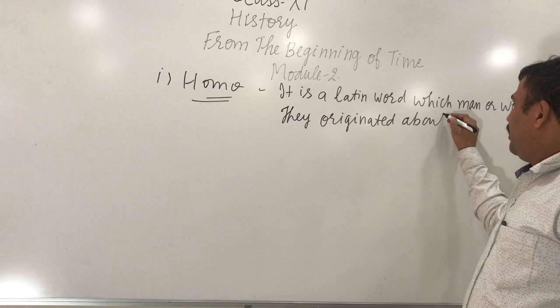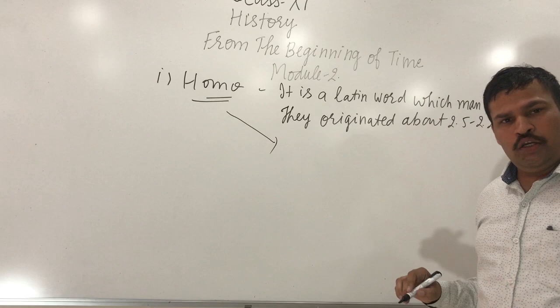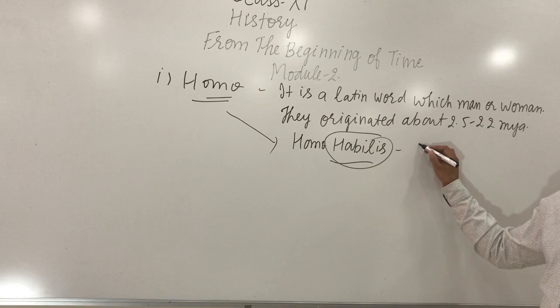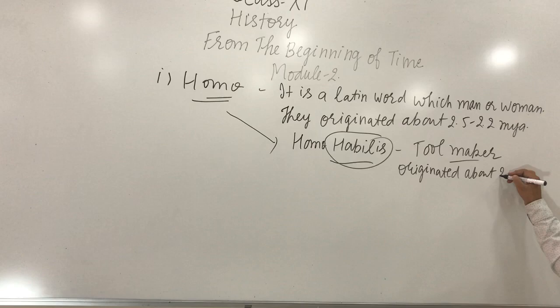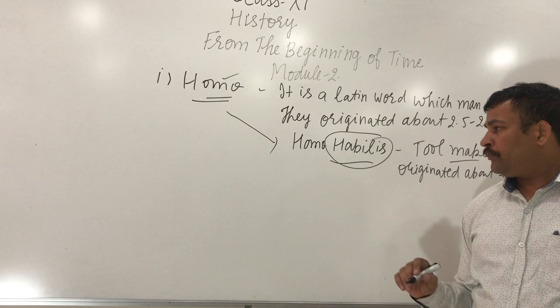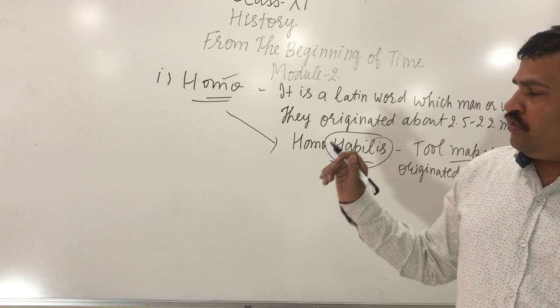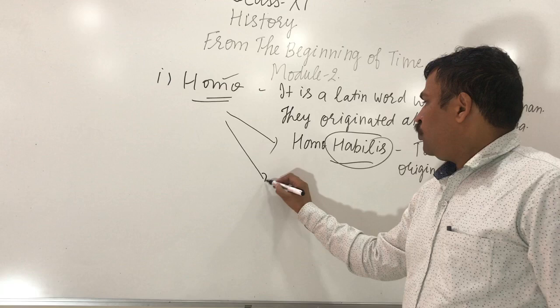About 2.5 to 2.2 million years ago, these creatures came on the earth. They have been classified into three parts. The first is Homo habilis, which means the tool maker. They originated about 2.2 million years ago. Some of the tools found in Ethiopia, Kenya, and Tanzania belong to this period, dating back 2.2 million years.